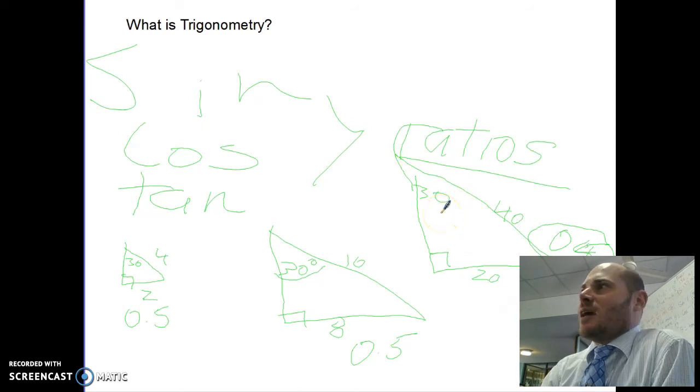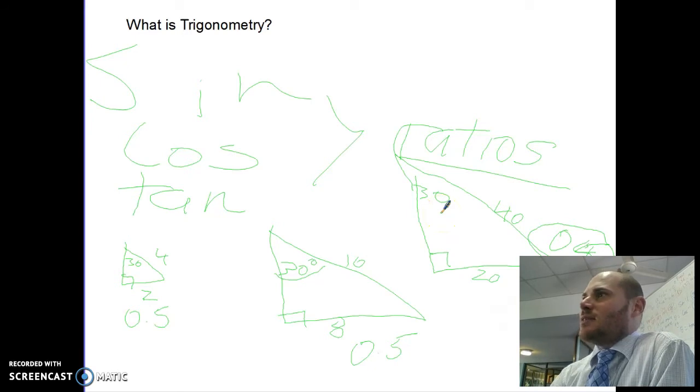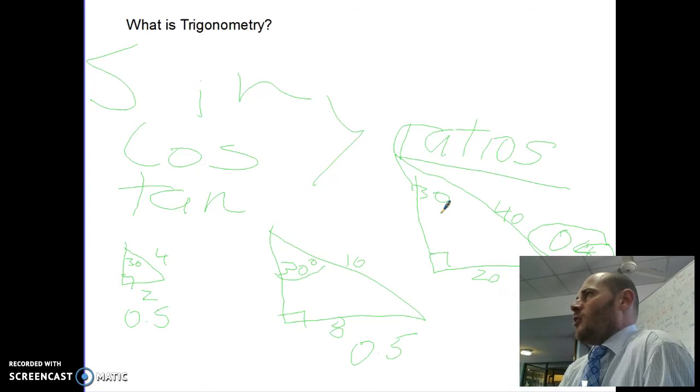So you can test that. If you, in your calculator, if you went sine 30, enter, you got 0.5. So what it means is that every triangle that I draw with 30 degrees, the opposite divided by the hypotenuse is going to give me 0.5.